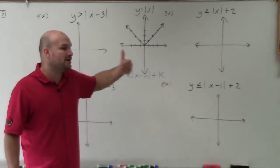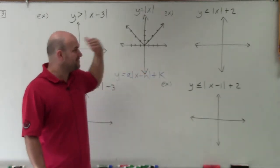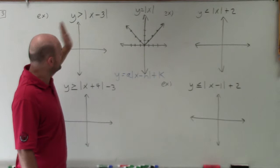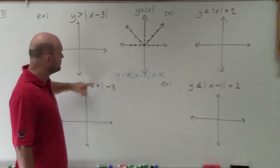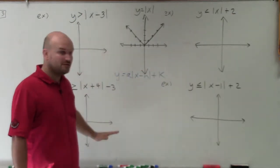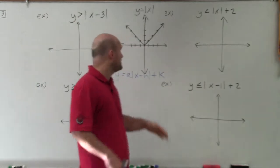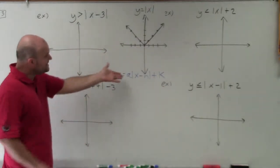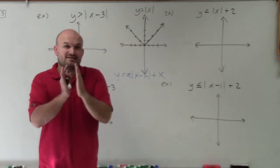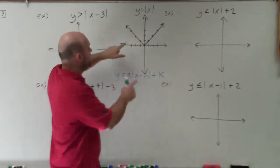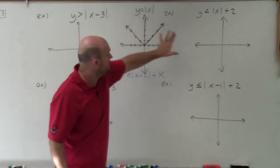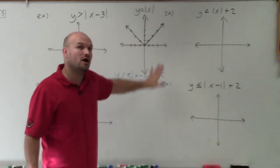We do have an h and a k. Remember, h is always inside the function, and it's always the opposite: when the expression is minus, you're actually shifting to the right; when it's plus, you're shifting to the left. When you have a transformation outside the function — k — if it's negative, you go down; if you're adding, you go up. Since we have an a of 1, just like the parent graph, I'm not going to be compressing or stretching the graph at all. All we're simply doing is taking the V shape and moving it left, right, up, or down.